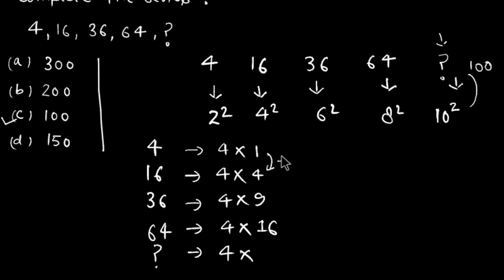We multiplied 4 by 1 to get 4. Here, I increase the number by 3, so 1 plus 3 is 4, and 4 times 4 is 16. For the next term, I add 5, so 4 plus 5 is 9, and 4 times 9 is 36.